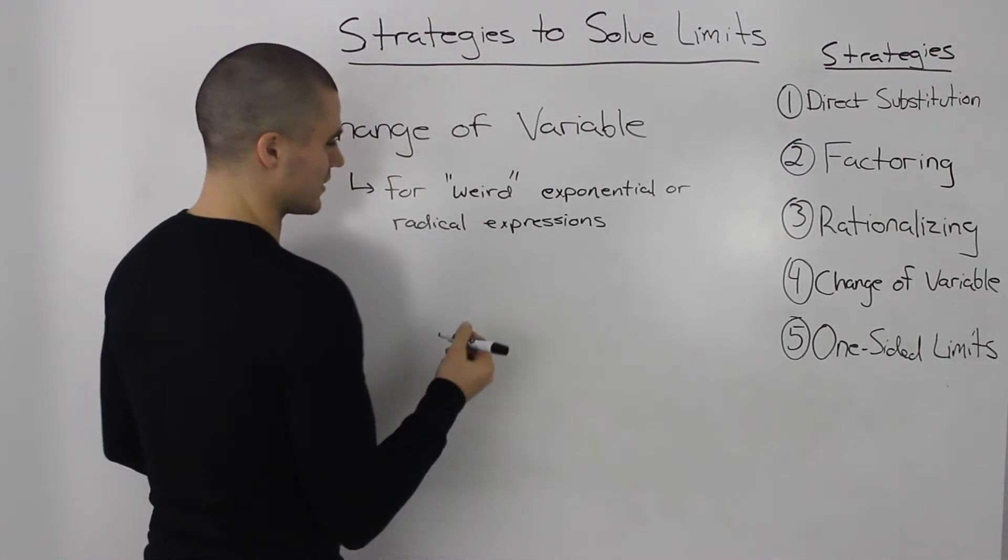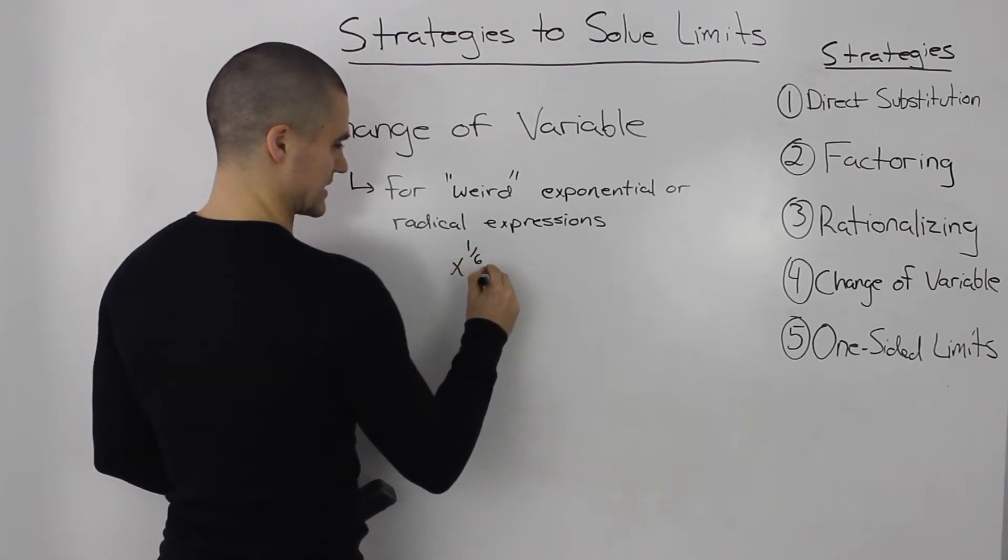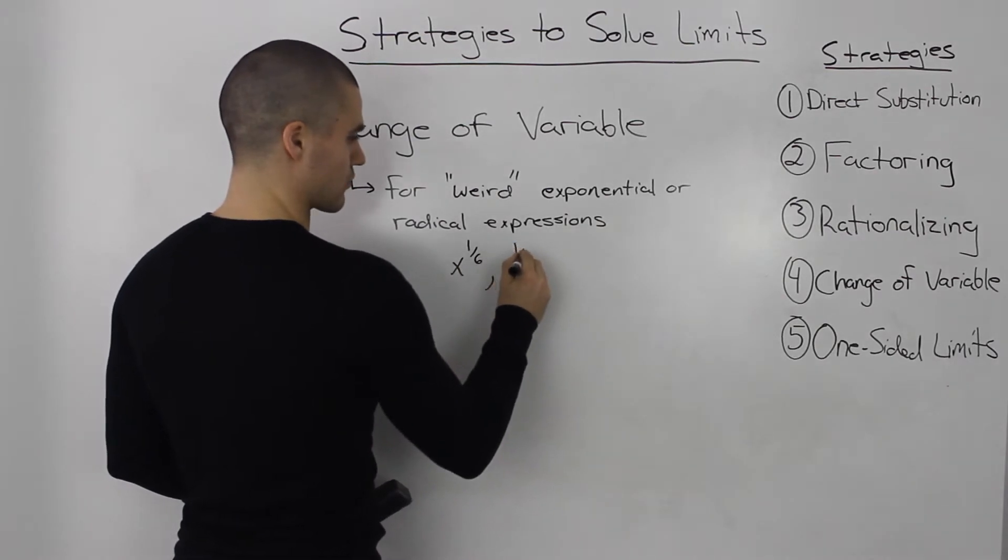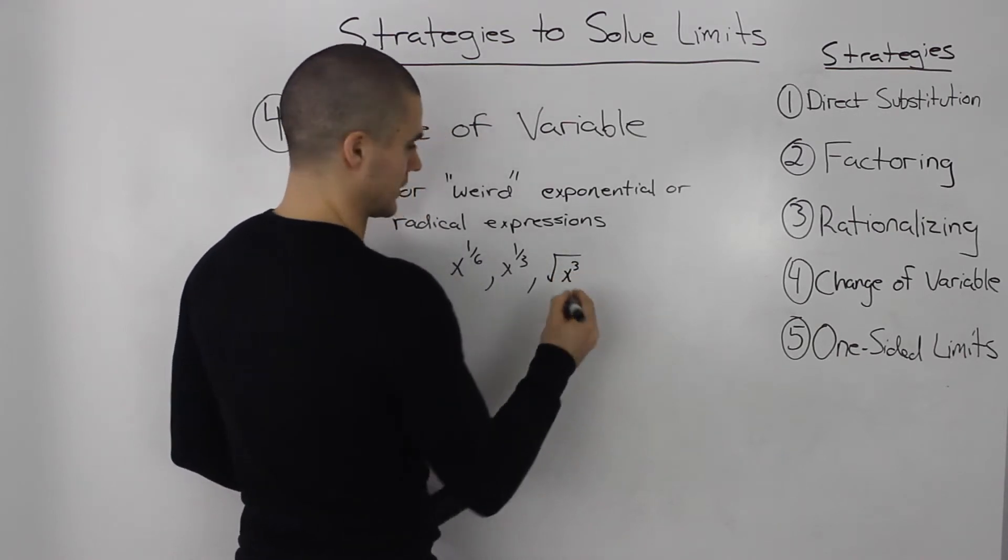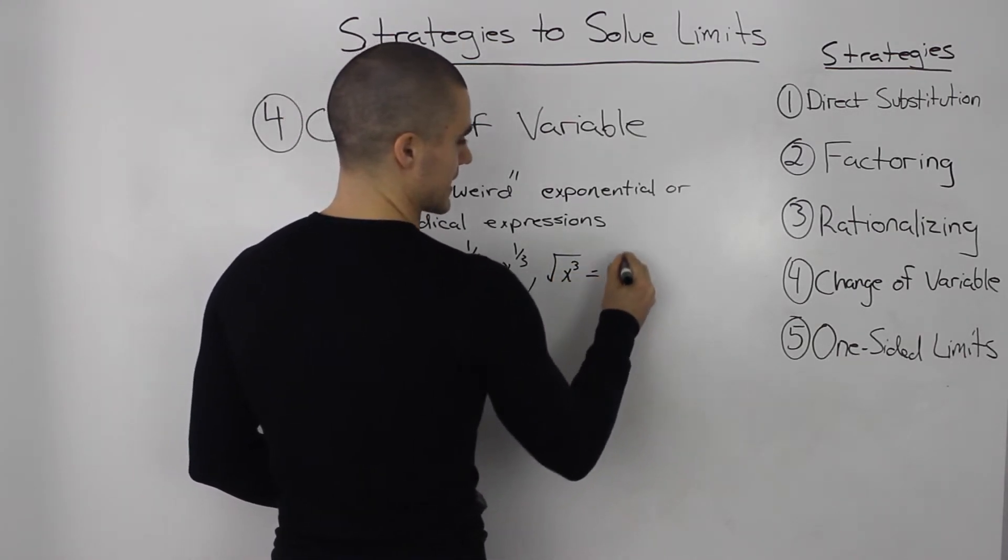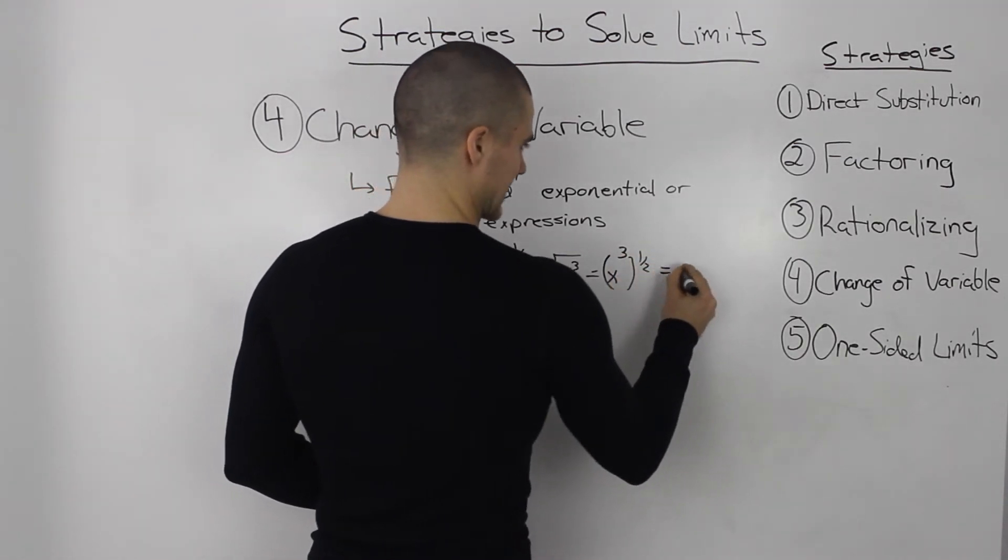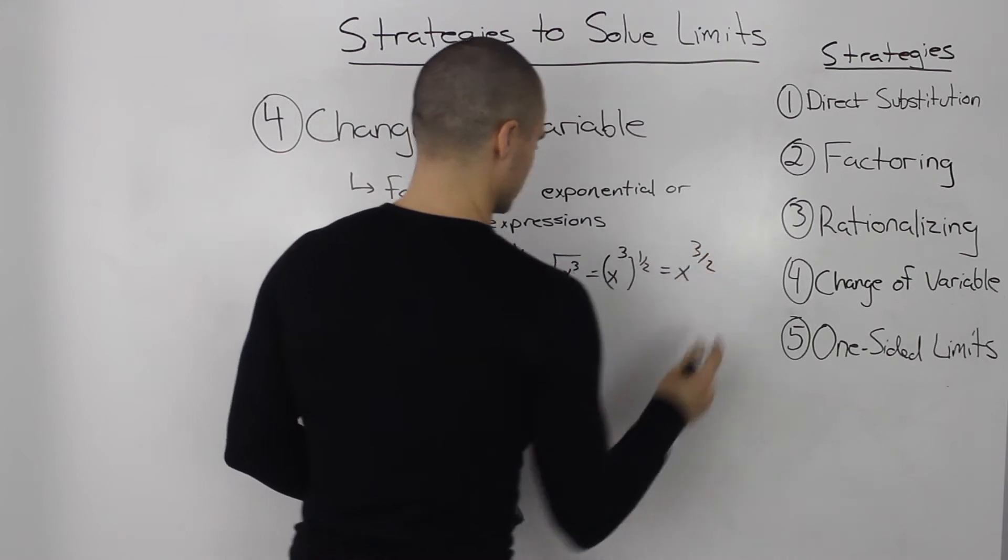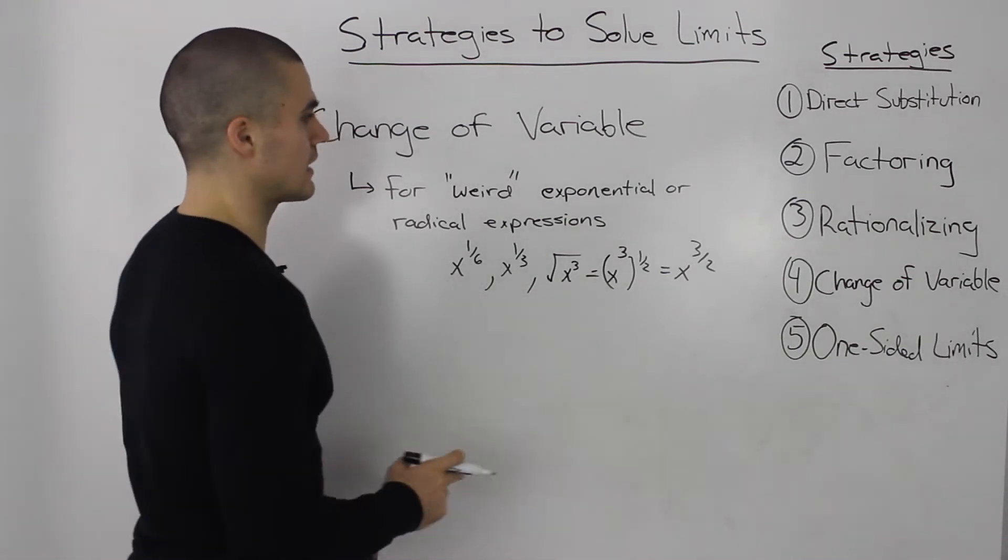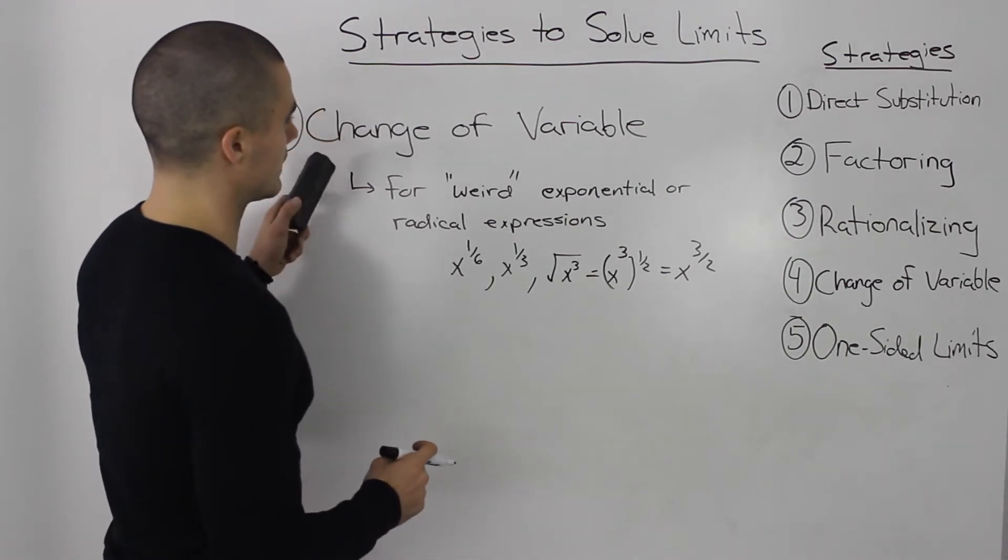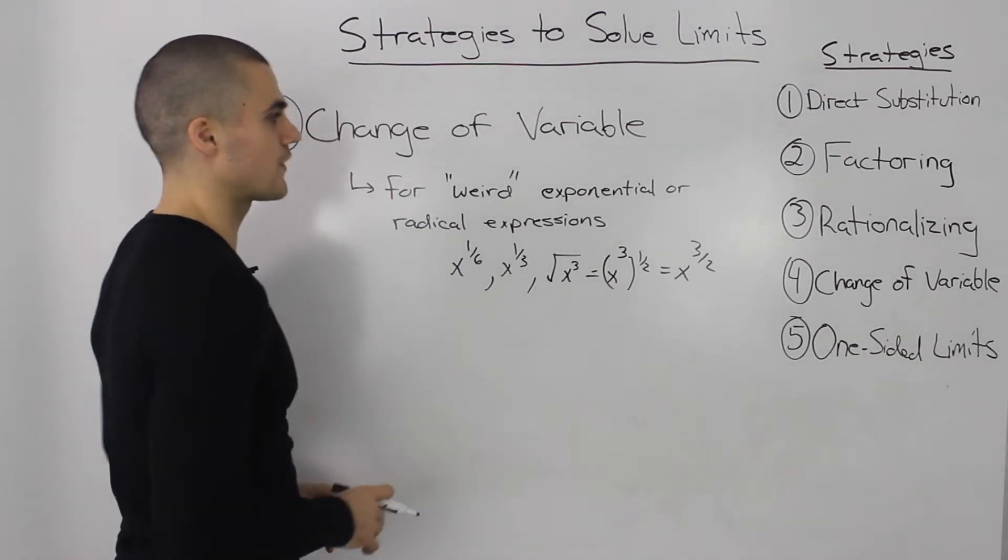So what I mean by weird is when you see things like x to the power of 1 over 6, x to the power of 1 over 3, maybe you'll have something like the root of x cubed, which we could also rewrite as x to the power of 3 over 2. If you see something like this in the limit that you're solving, then you can be pretty sure that you're going to be using the change of variable strategy.